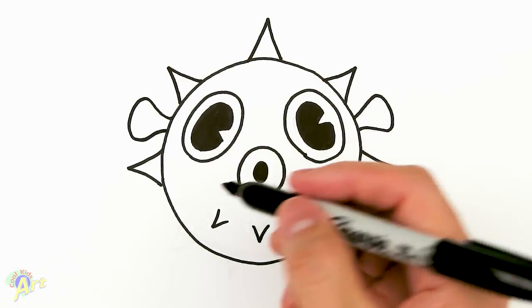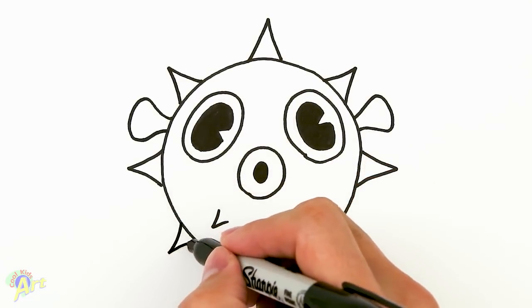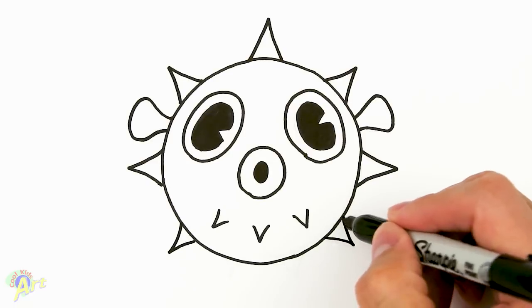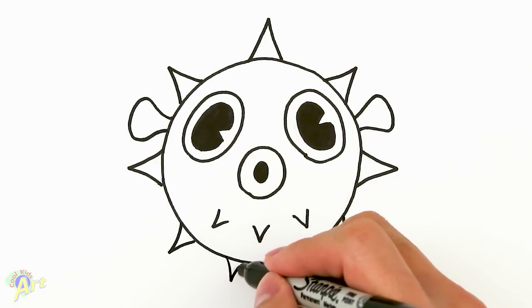And now for the little spikes on the bottom. So right here, we're just going to go one, one, and we're going to draw two smaller ones in here.